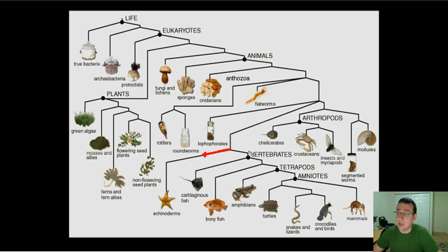And the next big step is the evolution of things like ray fin or lobe fin fish, and among those, you're going to evolve lungfish. From the lungfish, you're going to evolve things like amphibians, which is the next big step.